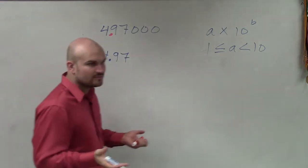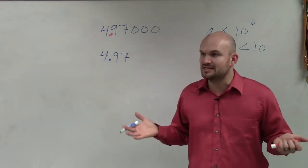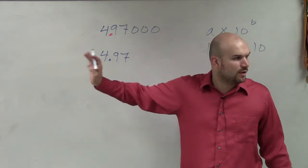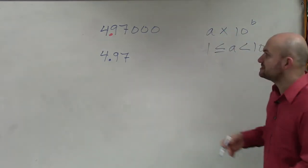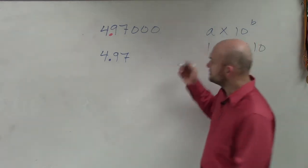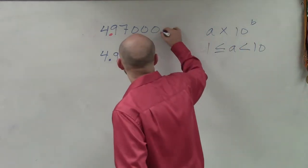Do you guys see how that's the only place I can put the decimal point where my a would be between 1 and 10? Everybody see that? Now what we need to account for is currently, the decimal point is over here.